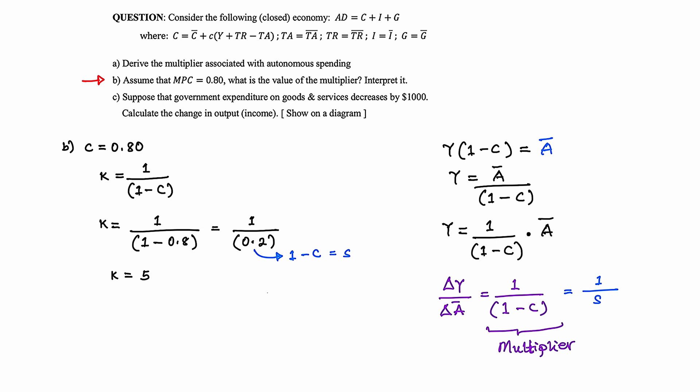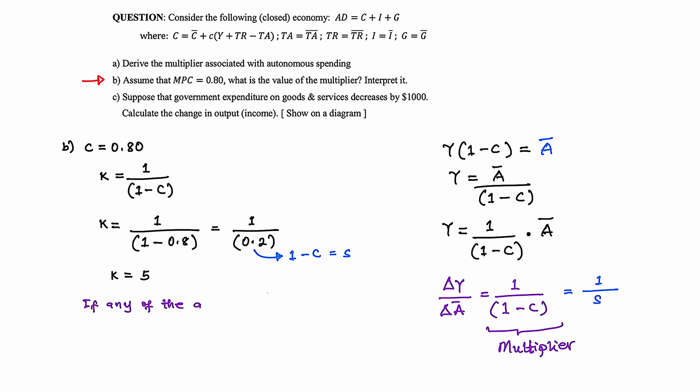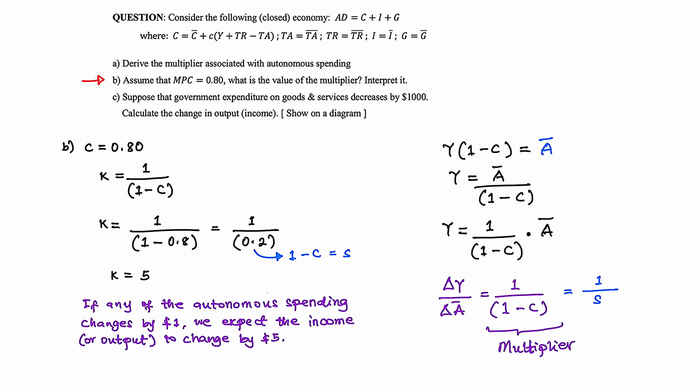Now that we found the multiplier as 5, we need to interpret it. We interpret it by saying: if the autonomous spending changes by $1 or 1 unit, we expect the change in income or output to be equivalent to 5. So a change in any autonomous spending by $1 means we expect income or output to change by $5.